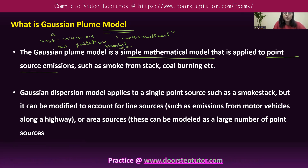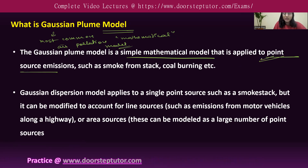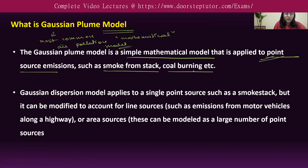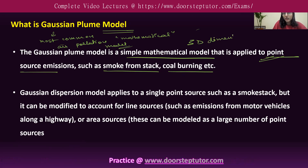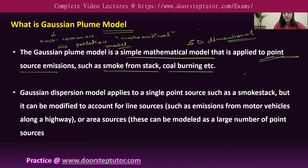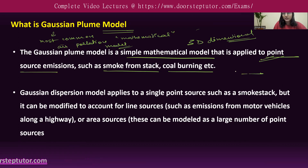One thing to note is that this model is applied to point source emissions, like smoke from a chimney stack or coal burning. Under this model, we talk about three-dimensional concentration — meaning we have three axes: the x-axis, the y-axis, and the z-axis. Across all three axes, we are measuring the concentration of the air pollutant.